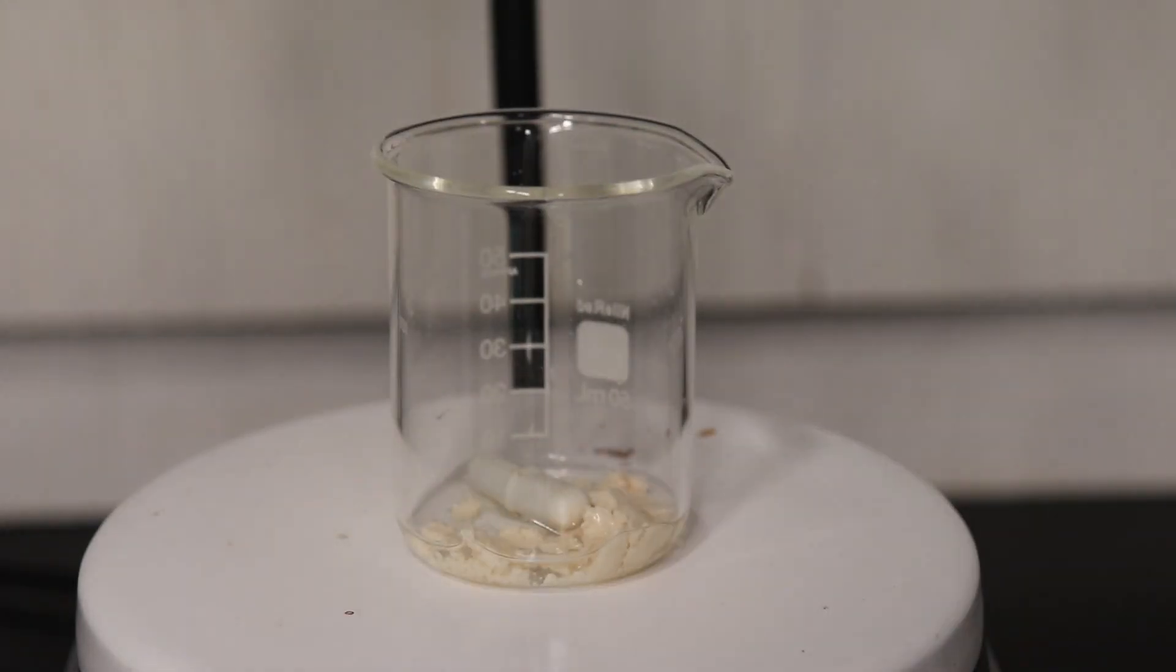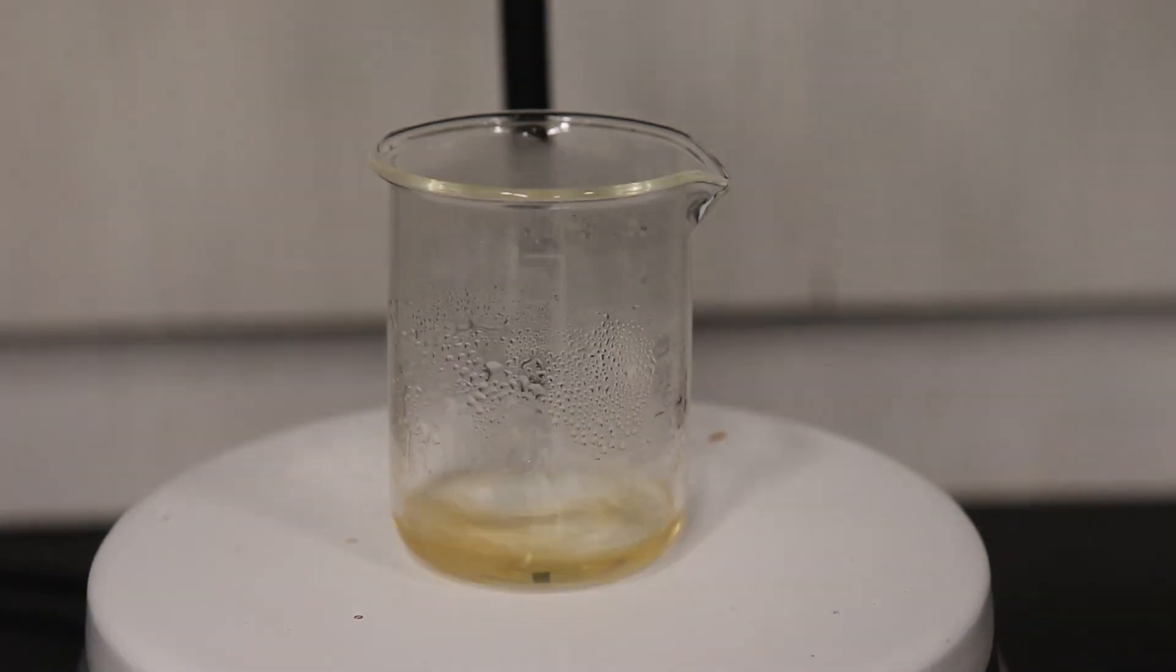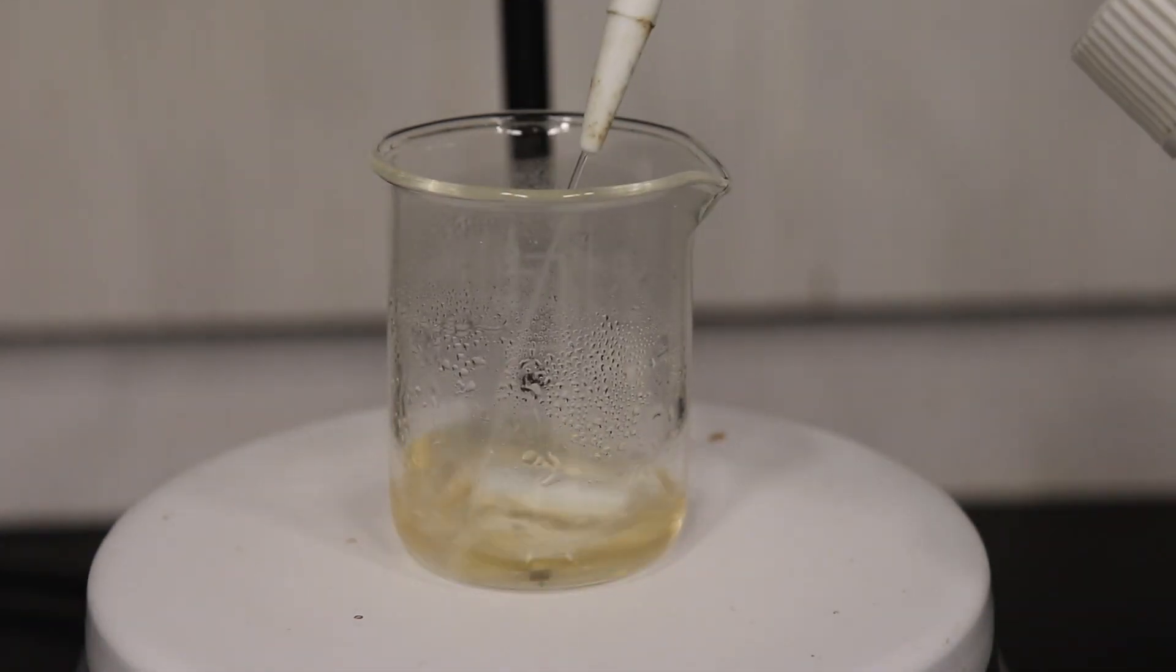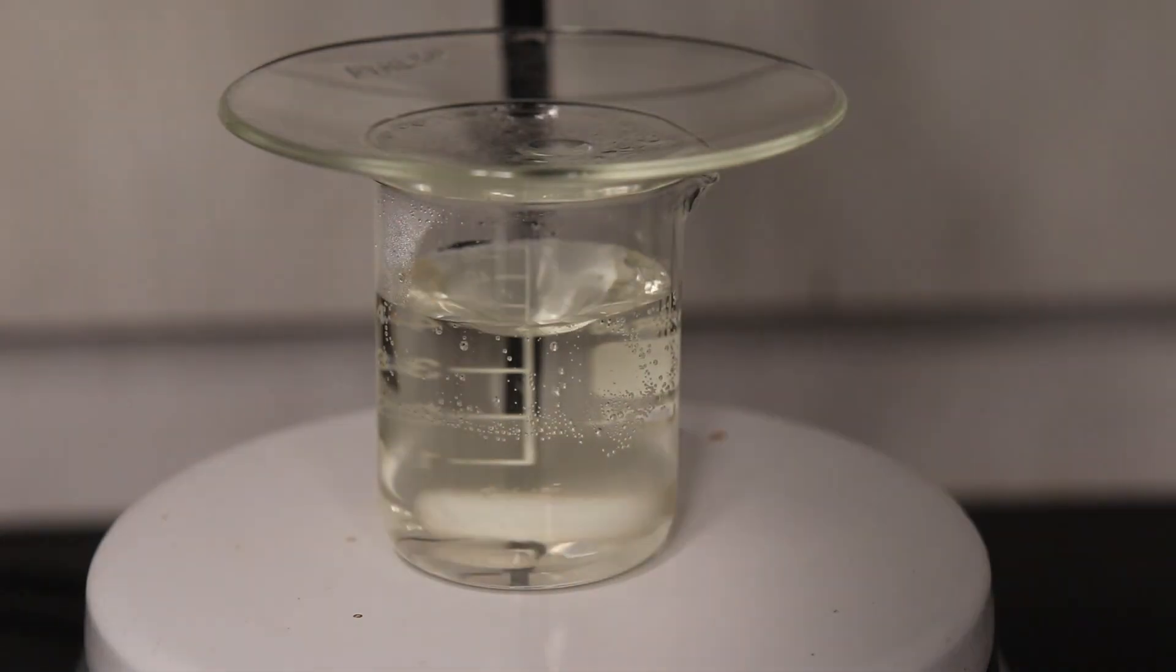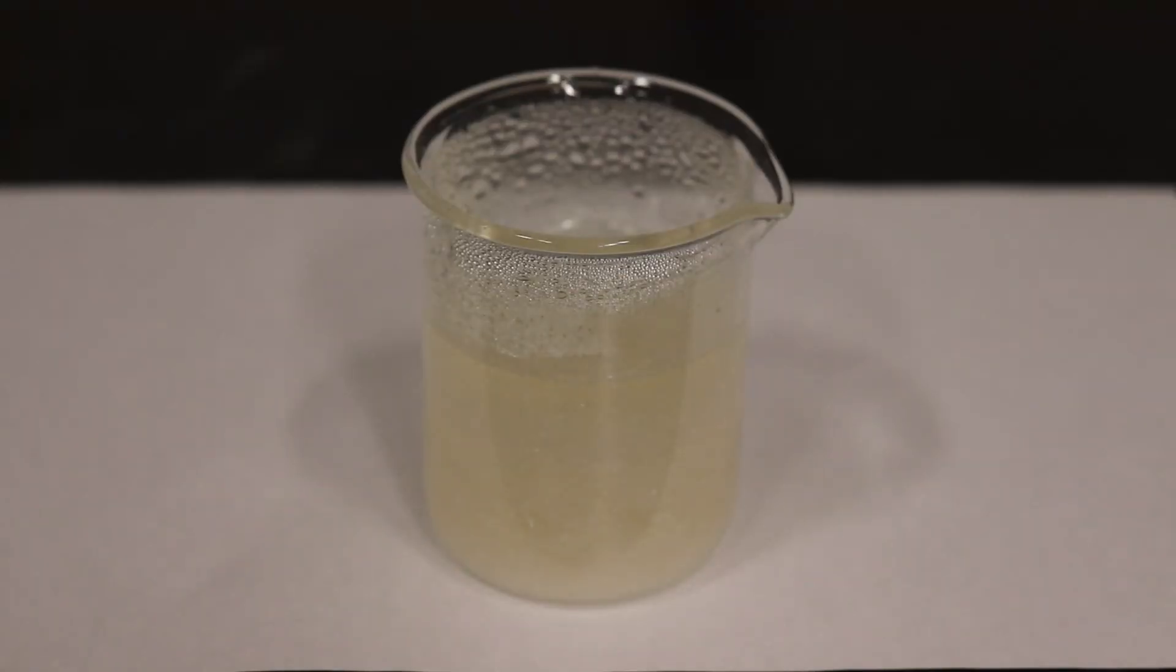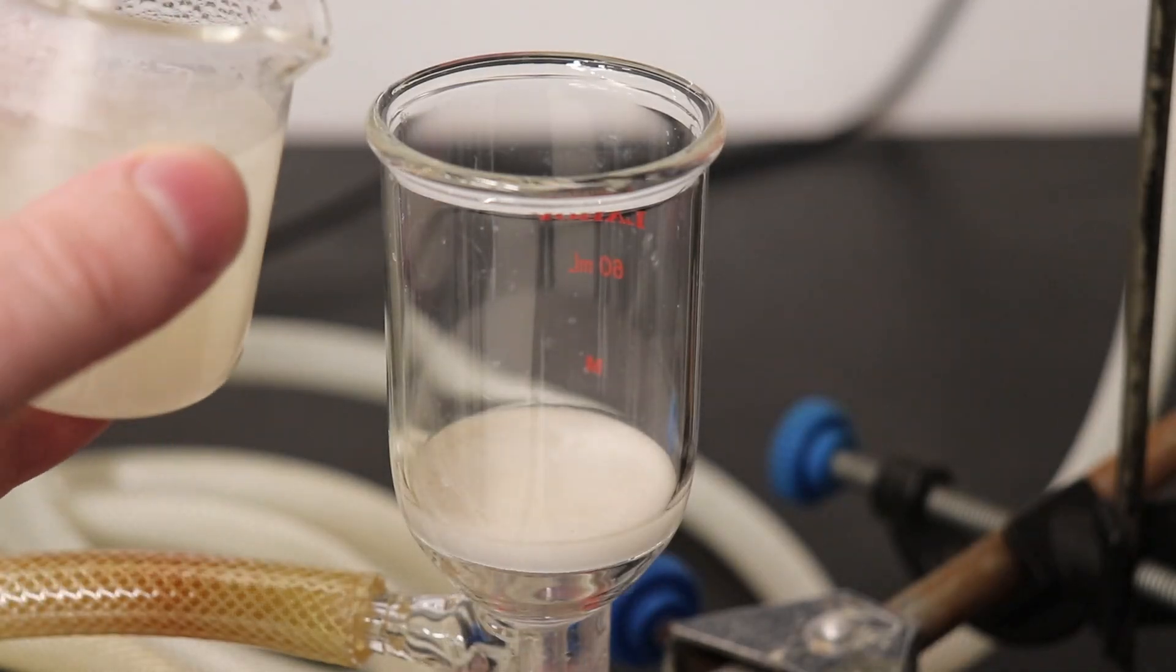I then recrystallized the product from hot ethanol and water, and in total I ended up using about 50 ml of 10% ethanol. The hot solution was allowed to cool slowly to room temperature before being placed in the fridge to cool down further.